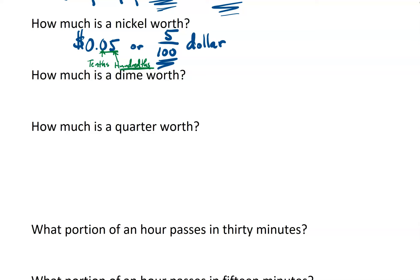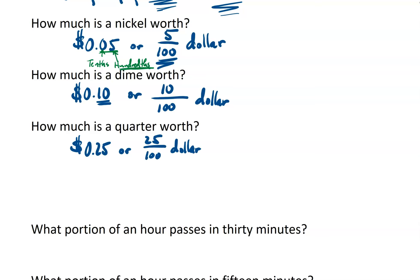So let's see another one. A dime then is worth 0.10 dollars. Now again, we've extended to the hundredths place, even though this is a zero, so I can write 10 over 100 as a fraction. And then a quarter, 0.25 or 25 one-hundredths of a dollar.